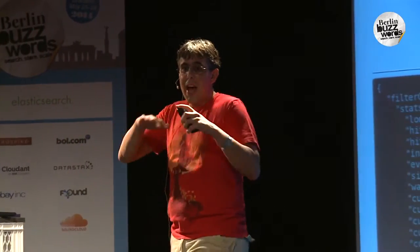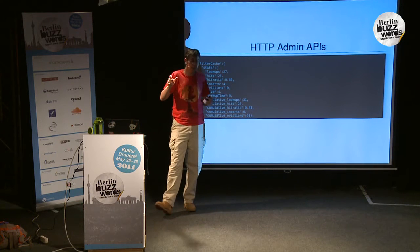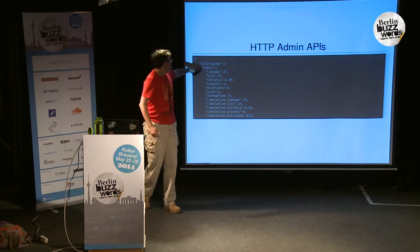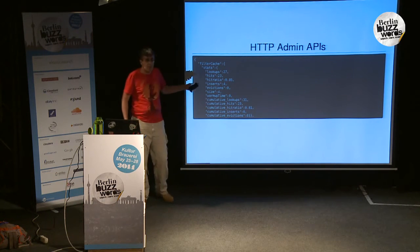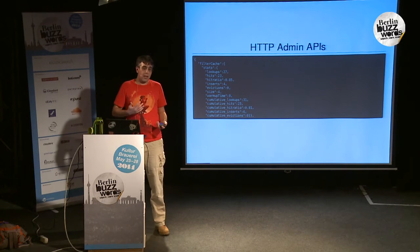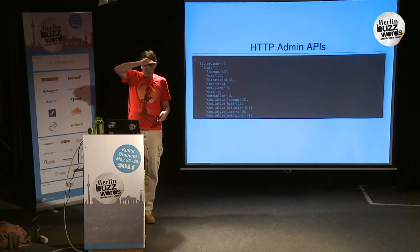Even if you don't use JMX, it's all available from a REST API. The admin UI is 100% JavaScript single-page running on the Solr port, and everything it gets is by talking to the Solr port and getting JSON back from APIs. This is that same cache stats info for the filter cache — cumulative rates, current rates — all accessible to you. You can hook that into your existing monitoring systems.